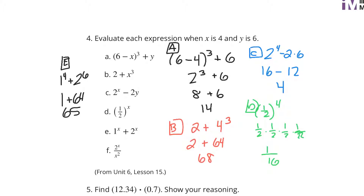And lastly, F: 2 to the fourth divided by x squared. 2 to the fourth is 16. It's x squared, which would be 4 squared, which is 16. 16 divided by 16 is 1. Math teachers make mistakes too — you just have to erase and fix it. All right, let's move on to the next thing.